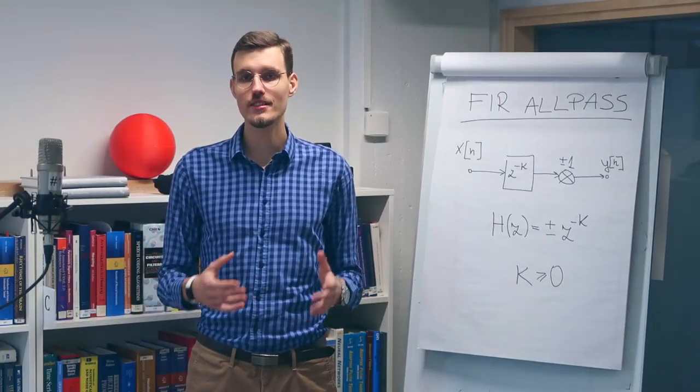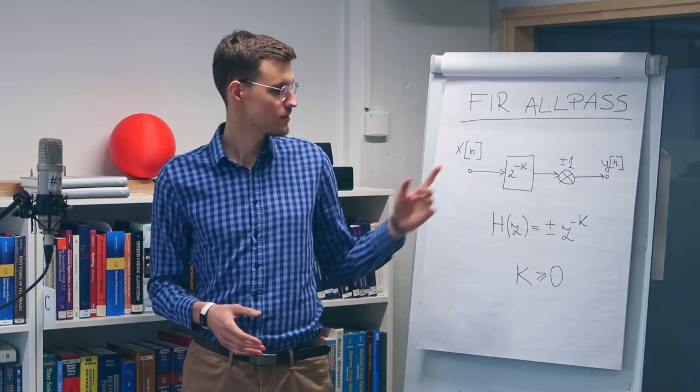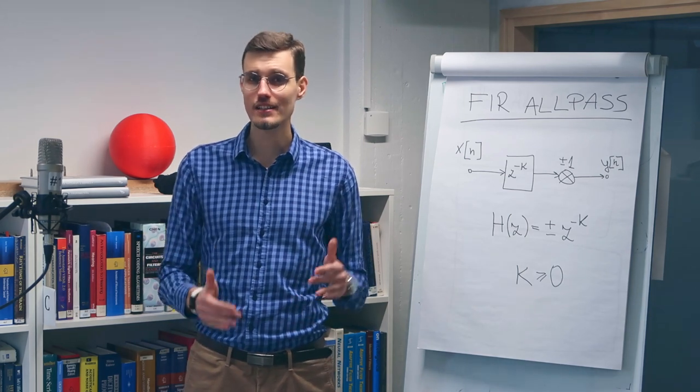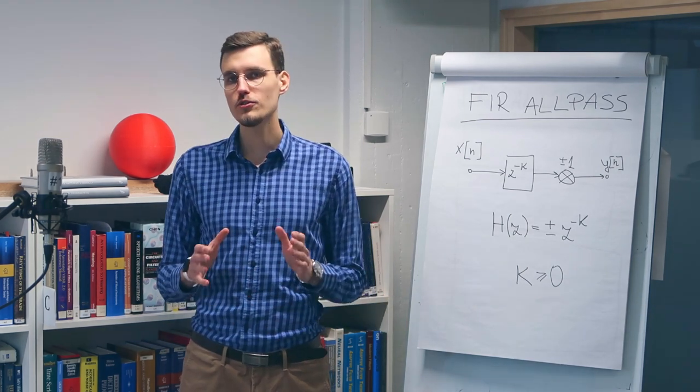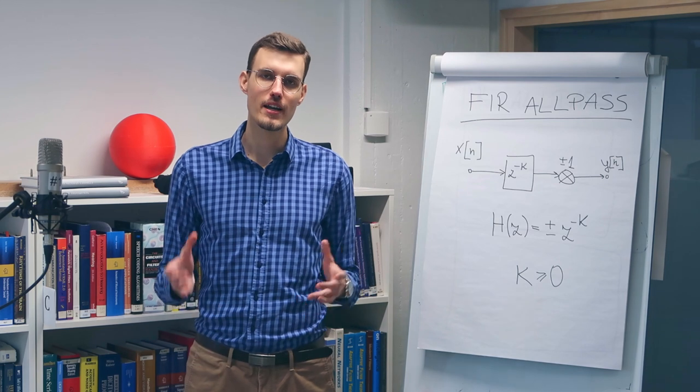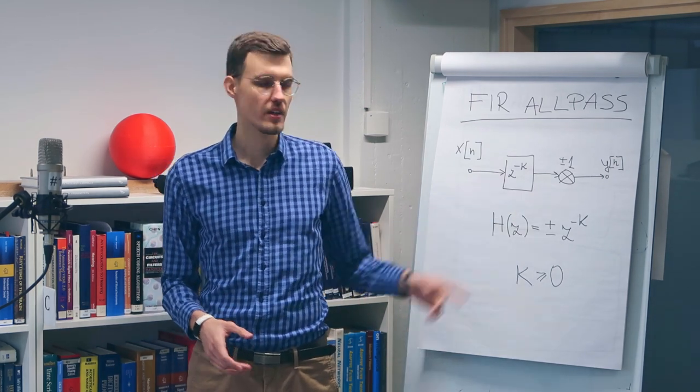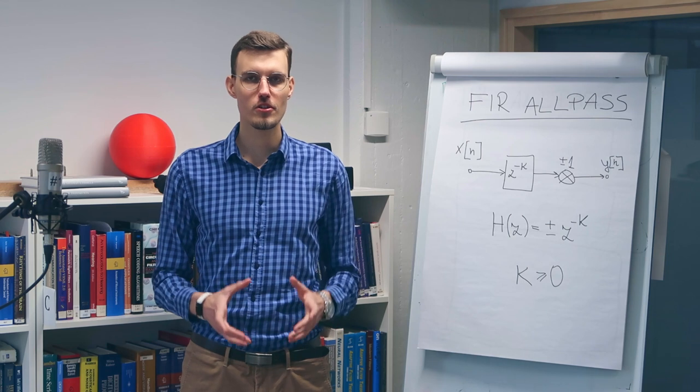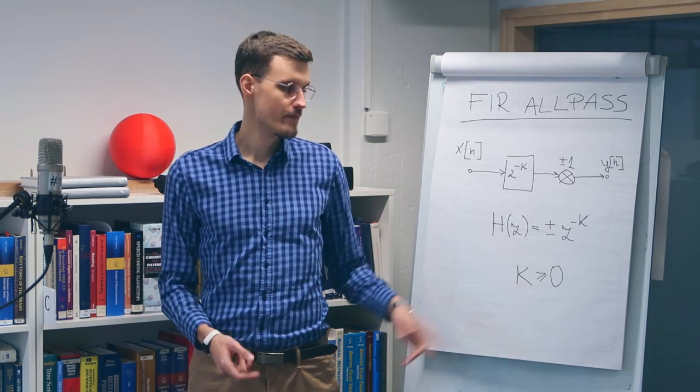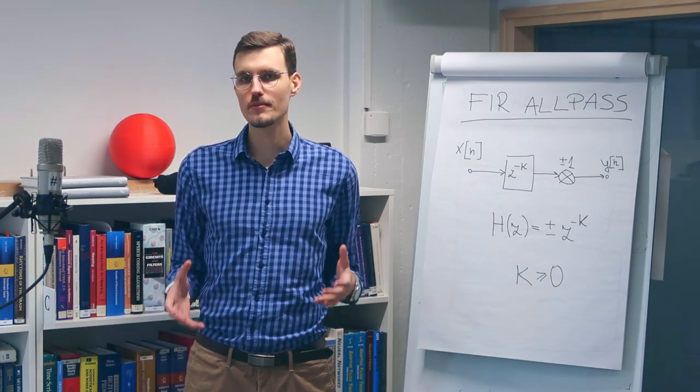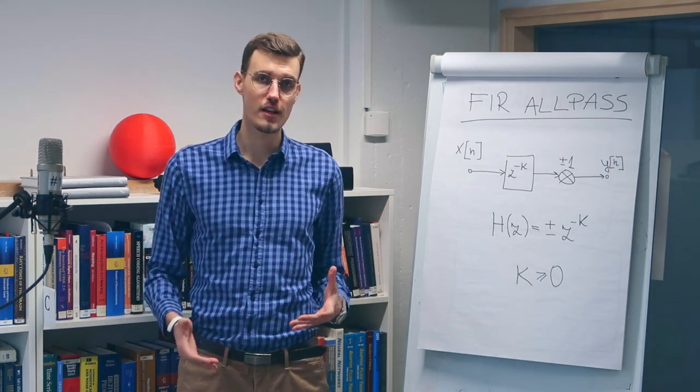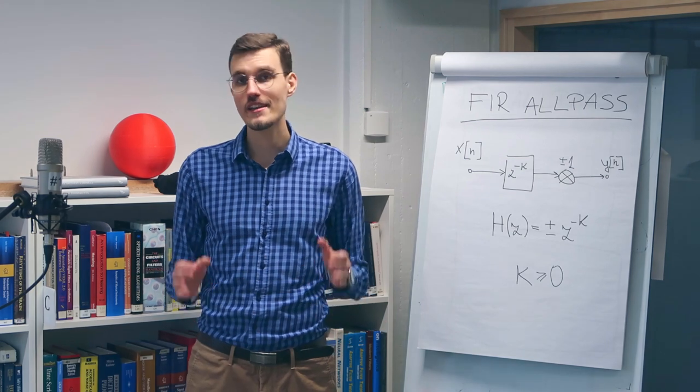An FIR ALLPASS filter is simply a delay by k samples. All frequency components have the same phase delay, are delayed equally. In order not to change the magnitude of any frequency component, we can only multiply the output by 1 or minus 1. So the transfer function of the FIR ALLPASS filter is plus minus z to minus k. And here k cannot be smaller than 0. If you're interested about delay, then I highly encourage you to check out my video on the topic.